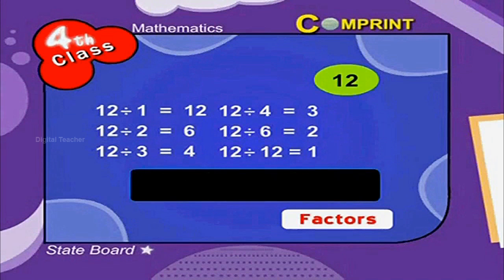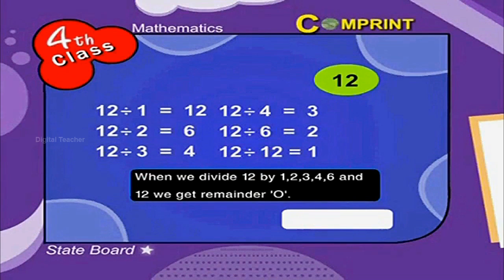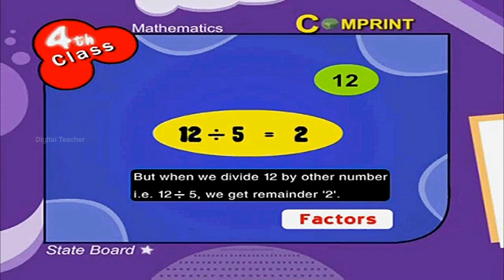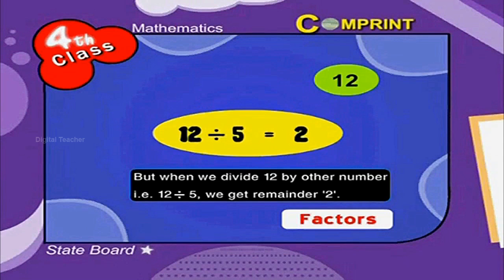When we divide 12 by 1, 2, 3, 4, 6 and 12 we get remainder 0. So we call them as factors of 12. But when we divide 12 by other numbers, that is 12 divided by 5, we get remainder 2. So we can say that 5 is not a factor of 12.